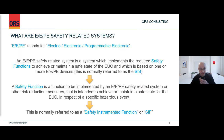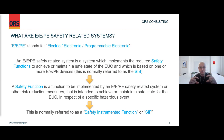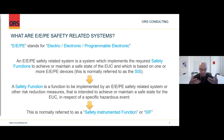E/E/PE safety-related systems are safety functions which achieve or maintain a safe state of the EUC and which are based on one or more E/E/PE devices. When several of these functions are implemented by one system, that's called the Safety Instrumented System, or SIS. Each of the functions within that safety instrumented system is called a safety function or a Safety Instrumented Function — a function implemented by an E/E/PE SIS intended to achieve or maintain a safe state for the EUC in respect to a specific hazardous event.